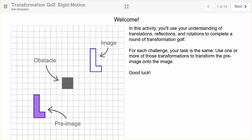So in this activity, you'll be taking the purple shape, which is called the pre-image, and you need to do transformations to make it line up with the white shape, which is called the image. Now, there are some obstacles, sometimes walls or just blocks. You cannot translate through them. You cannot rotate through them, but you can reflect or flip over them.